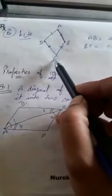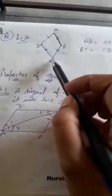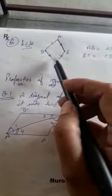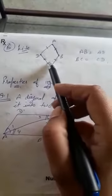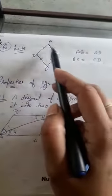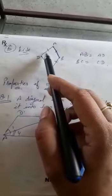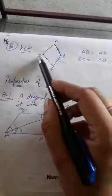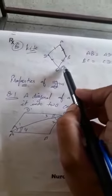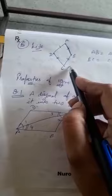Next is the kite shape. All of you have seen a kite — it is also a quadrilateral. A kite is a quadrilateral in which adjacent sides are equal. Here AD = AB and BC = CD. This is the kite shape. So these are the six types of quadrilaterals.